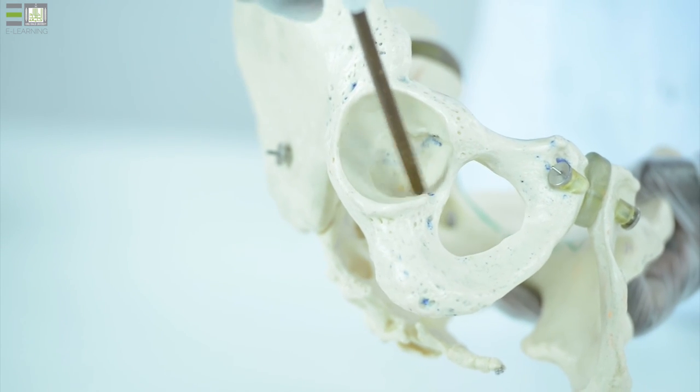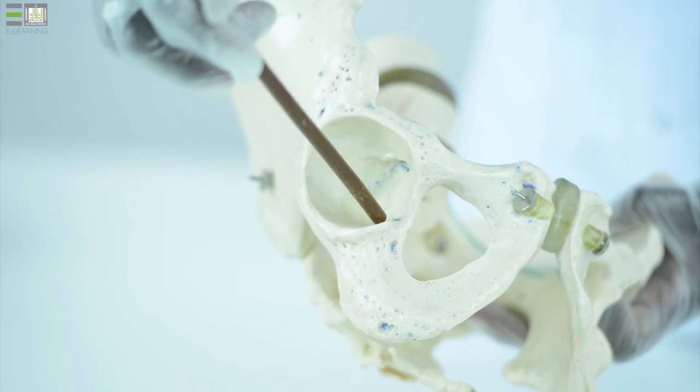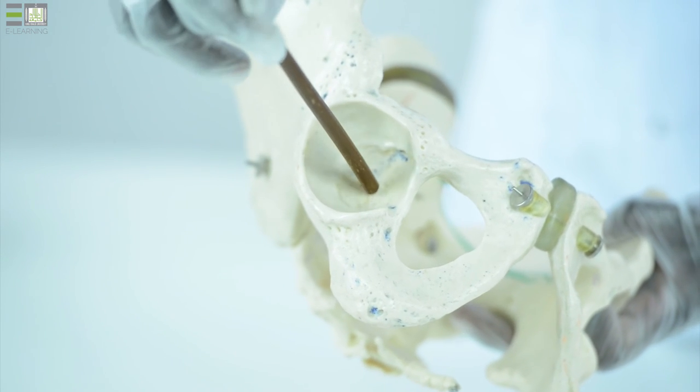This is the site where the three bones fuse to form the hip bone: the acetabulum. It consists of a lunate surface for articulation with the head of the femur and a depression called the acetabular fossa.